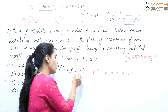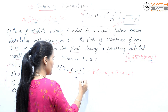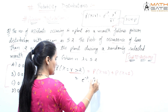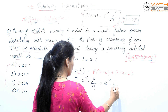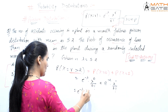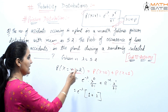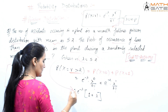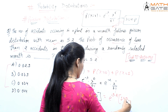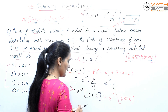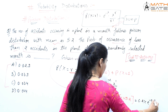Applying the formula: e to the power minus lambda times lambda power 0 by factorial 0, plus e to the power minus lambda times lambda power 1 by factorial 1. Taking e to the power minus lambda common, we get e to the power minus lambda times (1 plus lambda). Now, lambda's value is 5.2, so it becomes e to the power minus 5.2 times (1 plus 5.2), that is 6.2.